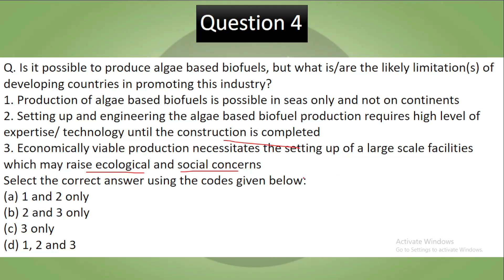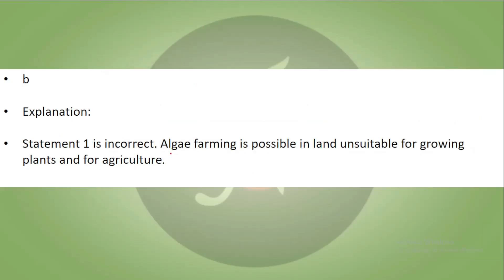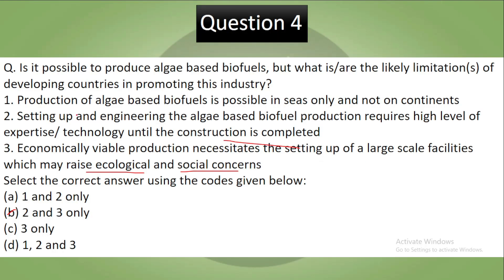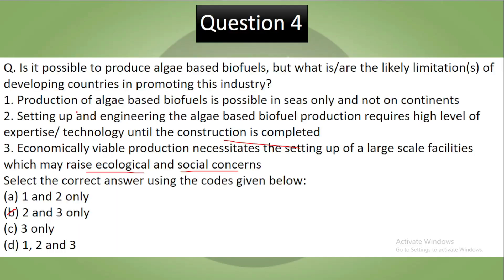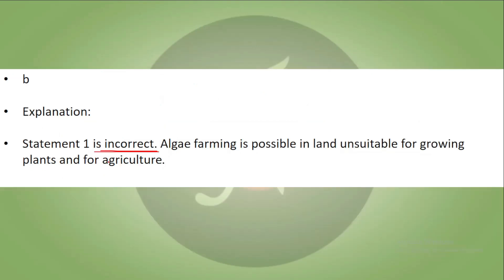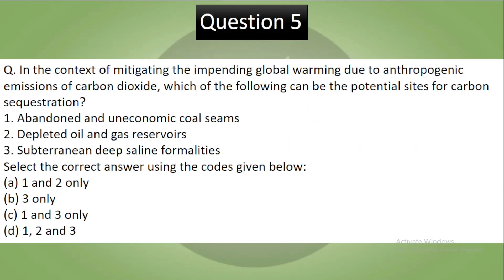Now let's discuss the answer. Your correct answer is B, which is 2 and 3 both. Statement 1 is incorrect — production of algae is possible in land unsuitable for agriculture, not seas only. That is an incorrect statement. Statements 2 and 3 are correct. Your answer is B.